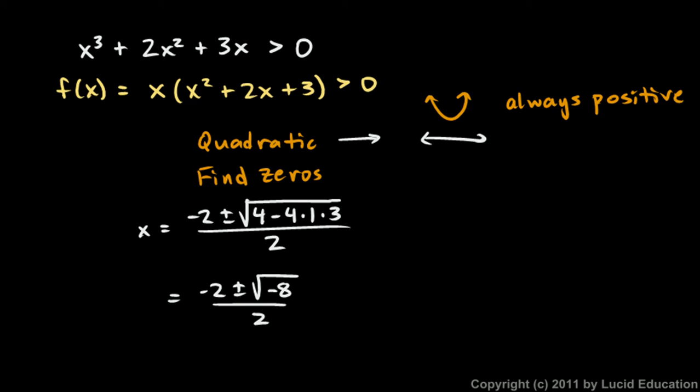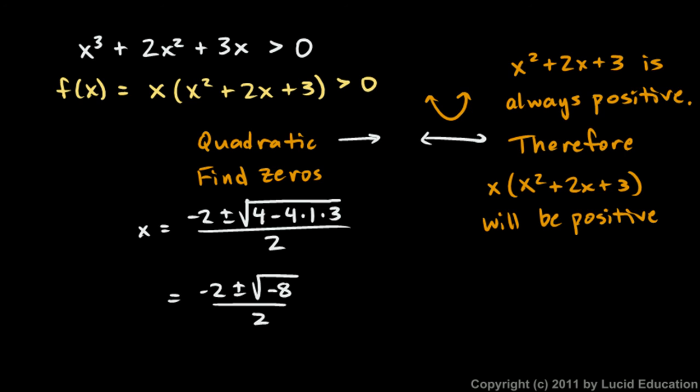I'll spell this out for you, the quadratic x squared plus 2x plus 3 is always positive. And then I'll say, therefore, x times that will be positive when x is greater than zero. And that's your solution. Very simple.